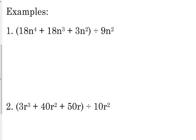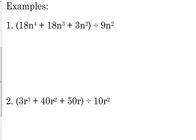18n to the 4th plus 18n cubed plus 3n squared, all of that is divided by 9n squared. So the way that I like to handle it is I just go through and I divide each term by 9n squared. I write it so that I don't forget, I don't miss anything, and then I simplify it piece by piece.